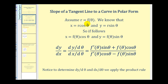If r is equal to f of theta, or some function in terms of theta, it makes sense from our study of parametric equations that dy/dx equals dy/dθ divided by dx/dθ. To understand where this formula comes from, we go back to trigonometry: x equals r cosine theta and y equals r sine theta. Since r equals f of theta, we replace r with f of theta.